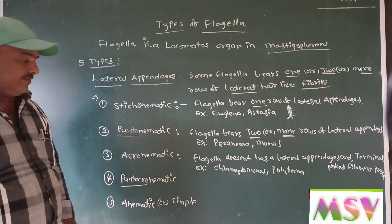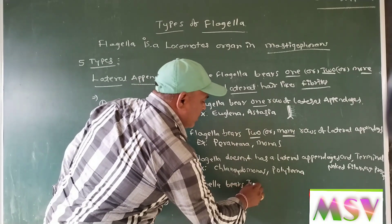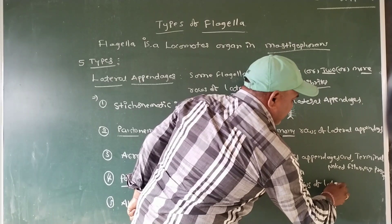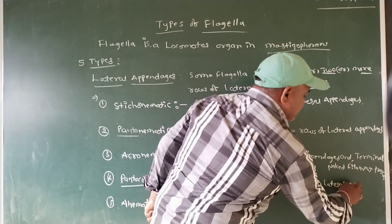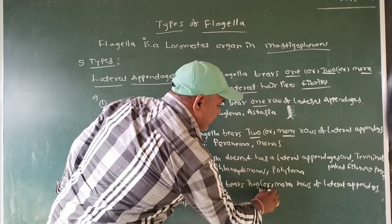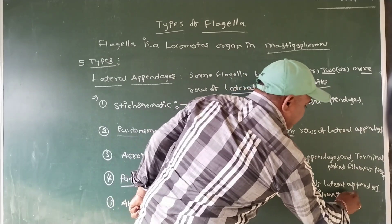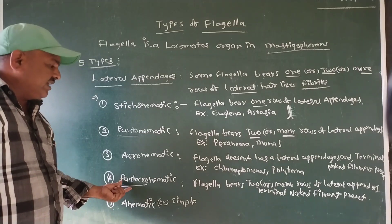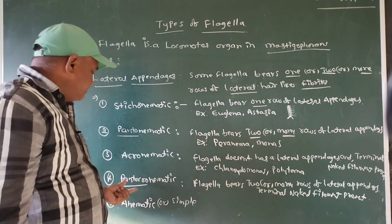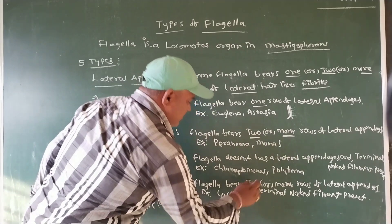Fourth, pantachronemotic. The flagella bears two or many rows of lateral appendages, and a terminal naked filament is also present. That is called pantachronemotic. Example: Arceolus.